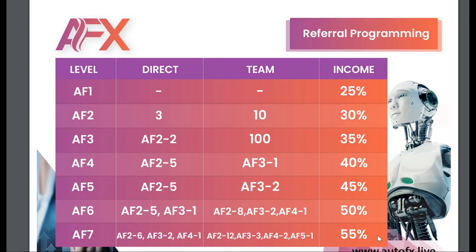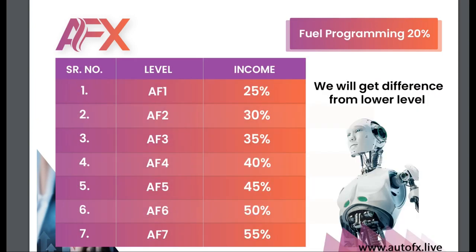The next income stream is the flow programming fee of 20%. The company has a fueling fee system. After you start trading — and your money is in your broker's account, not with them — for every profit the company makes for you, at the end of the month they take 20%. So you're sharing profits: you keep 80% and the company takes 20%. I think that's more than fair — some copy trading platforms take 50/50 or even 70/30.